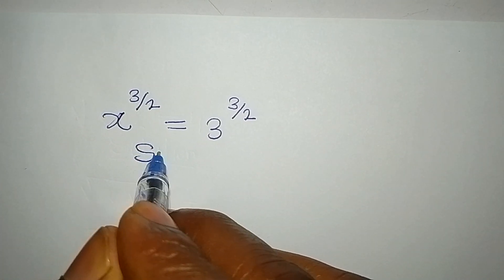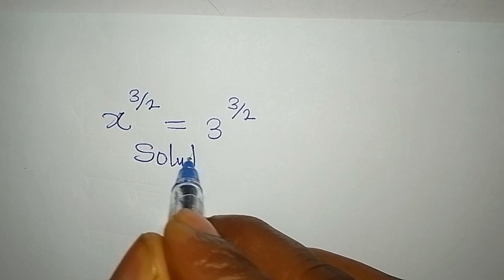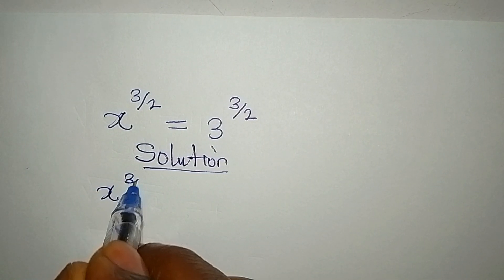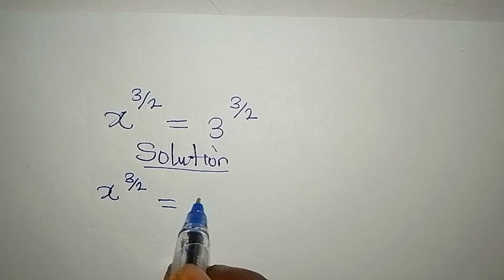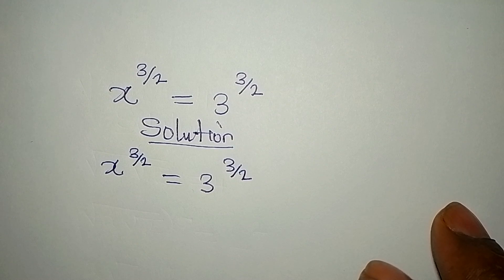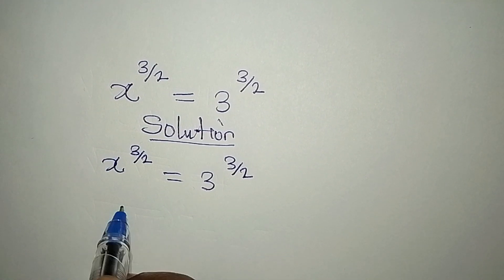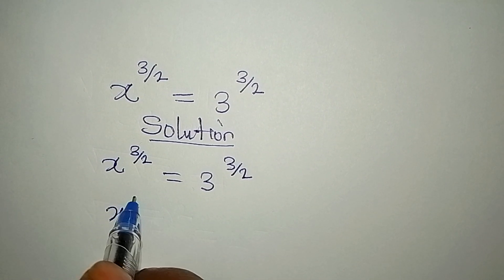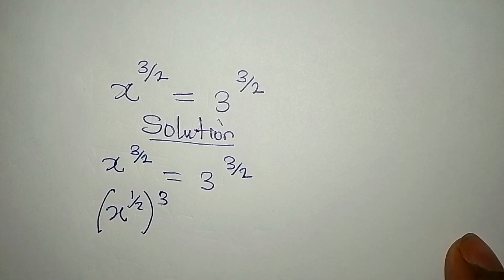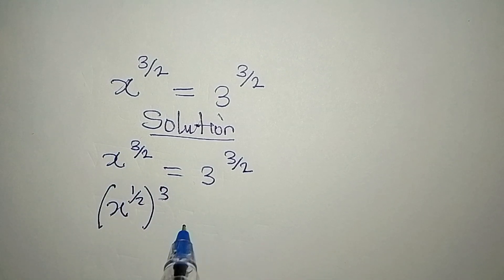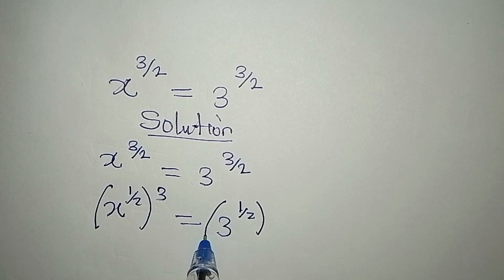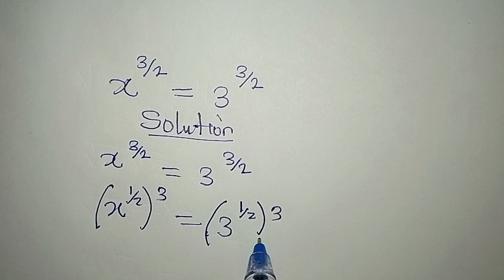Hello everyone, let's provide the complete solution to this problem: x to the power of 3 over 2 equals 3 to the power of 3 over 2. Now let's rearrange this — we can have x to the power of 1 over 2, to the power of 3, because if I open this bracket I will have this back. And that will be equal to 3 to the power of 1 over 2, to the power of 3.